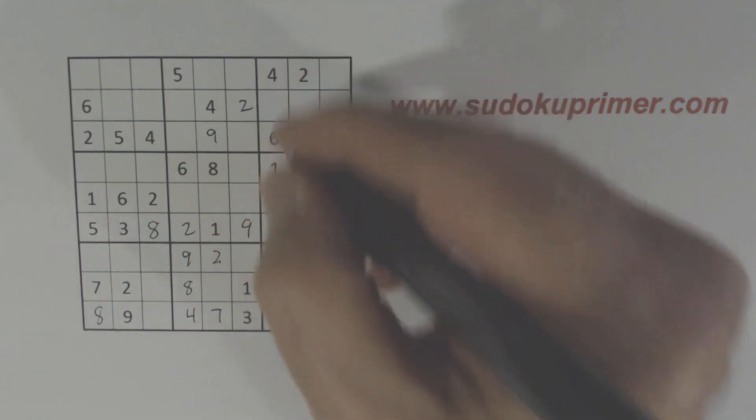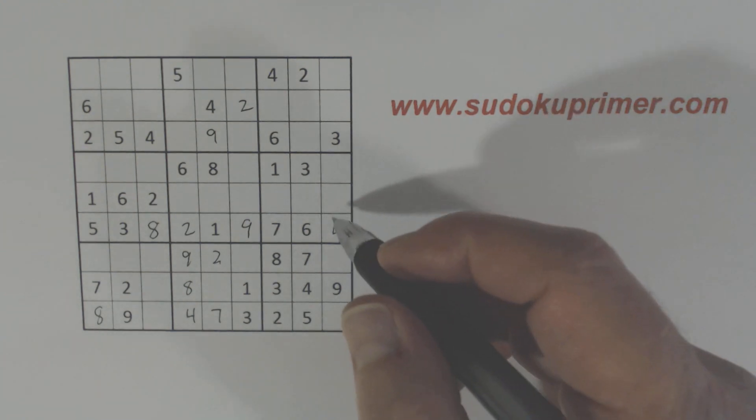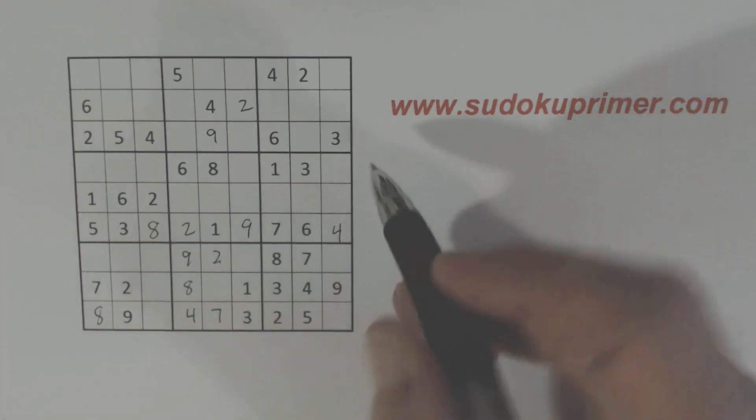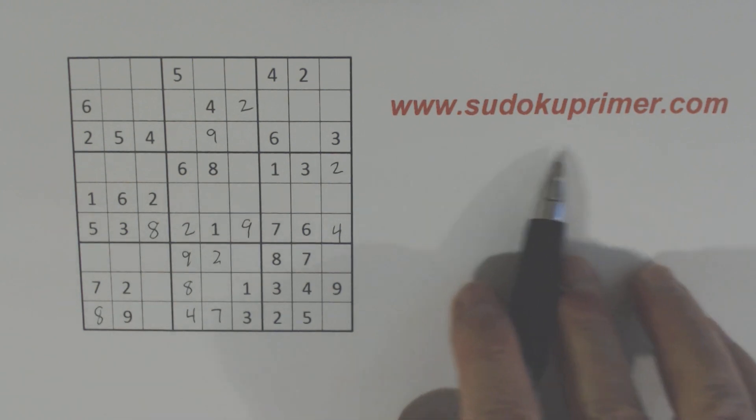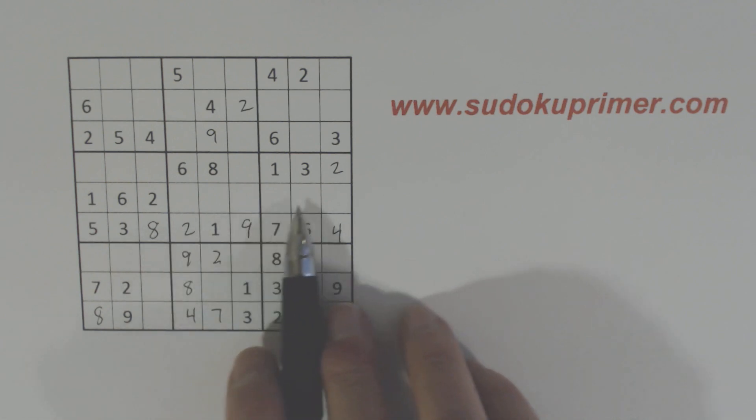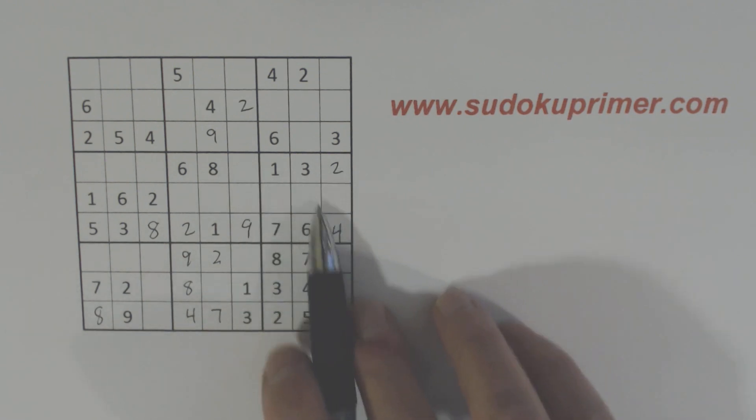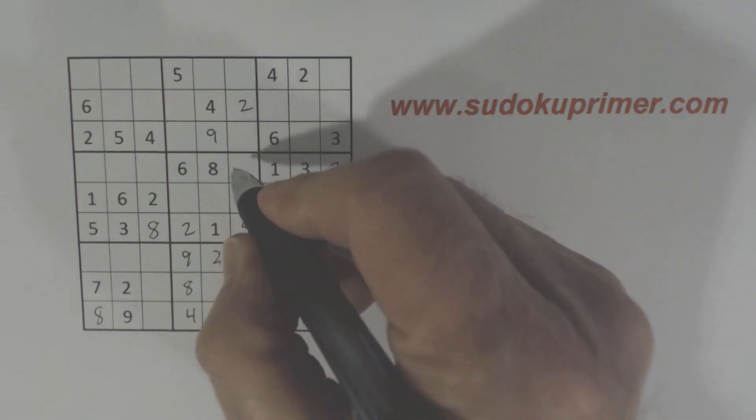And then we just have a 4 right there to complete that row. And now we have a 2 here. And we have a loaner cell right here. And there's a 2 there. So we know that's a 2. Loaner cells are also covered on the website. Now we know this is a 5 because another loaner cell. We've got an 8 and a 9 in that box already. So we know that's a 5.